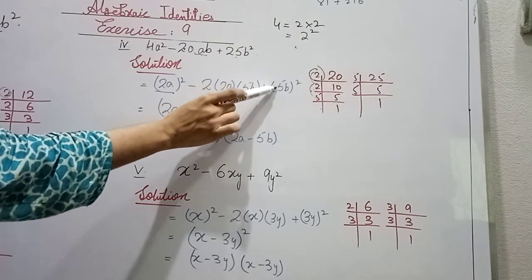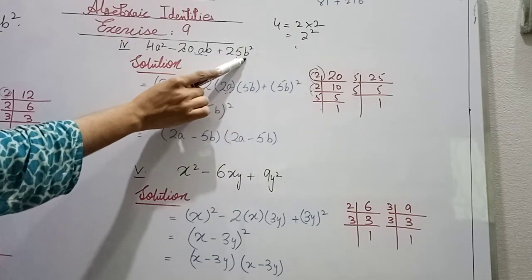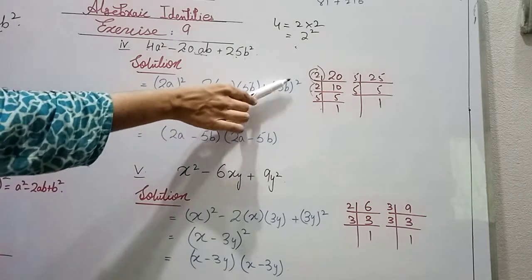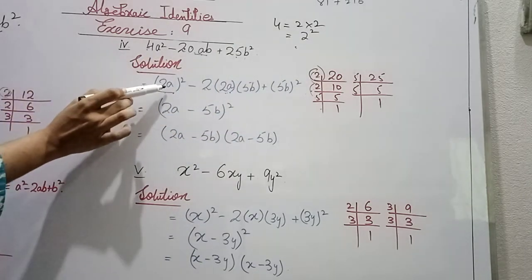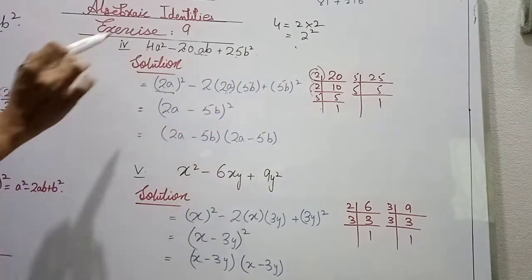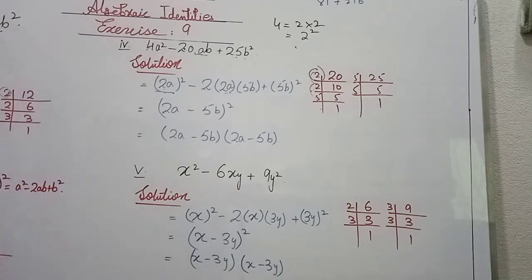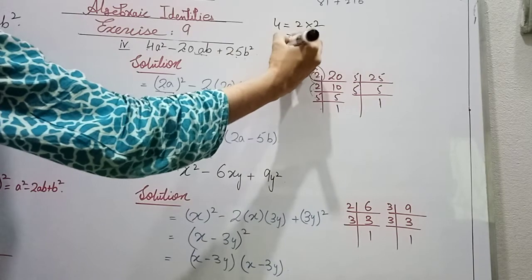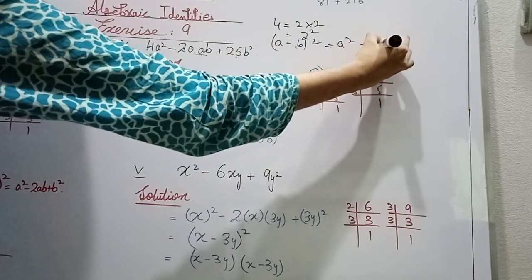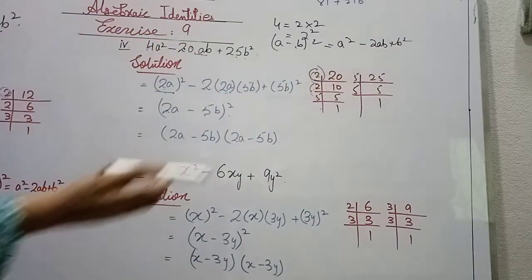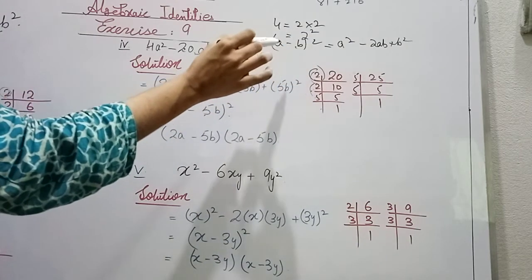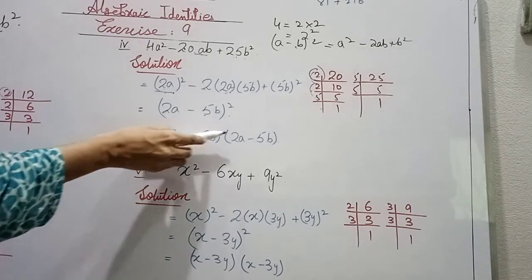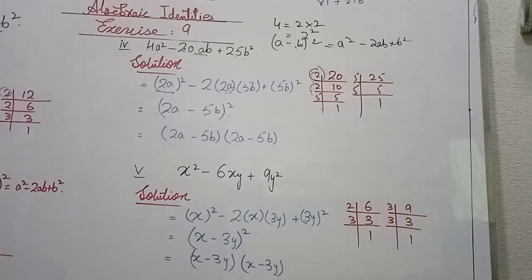So 5b² because b is already given, and 5² is already squared, we combine them and write the whole square. The a term is 2a and b is 5b. So the open identity is (2a)² minus 2 into 2a into 5b plus (5b)². Converting to closed identity gives (2a minus 5b)², which equals (2a minus 5b) into (2a minus 5b).